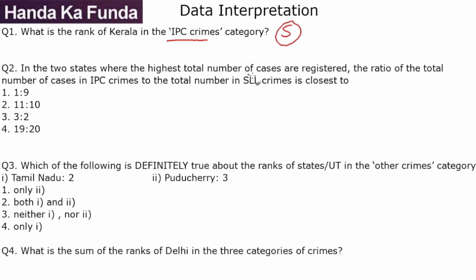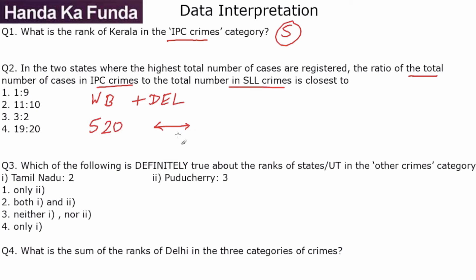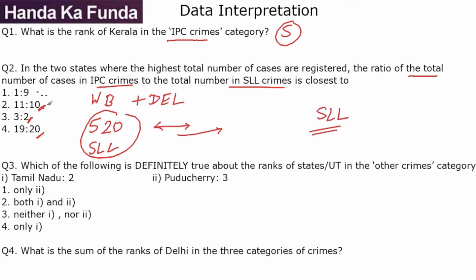In the 2 states where the highest total number of cases are registered — that is West Bengal and Delhi — what is the ratio of total IPC crimes to total SLL crimes? West Bengal had 520 SLL cases and zero IPC. Delhi's SLL was a small number compared to its IPC. Since West Bengal's 520 SLL cases dominate, SLL has to be significantly greater than IPC. The option where SLL is significantly more than IPC cases is the first option, so that must be the answer.